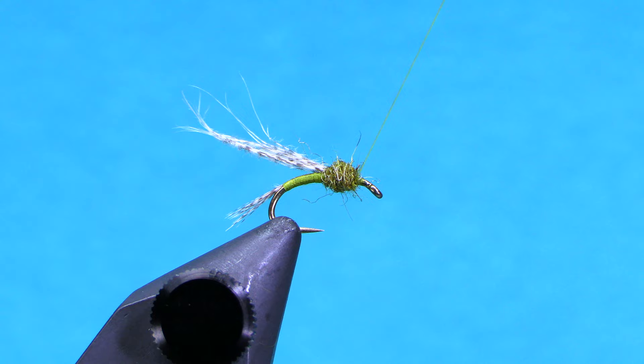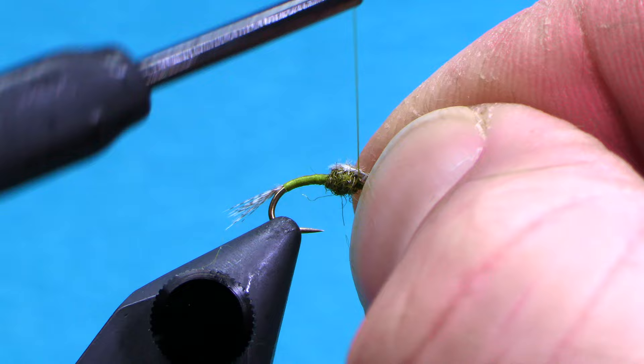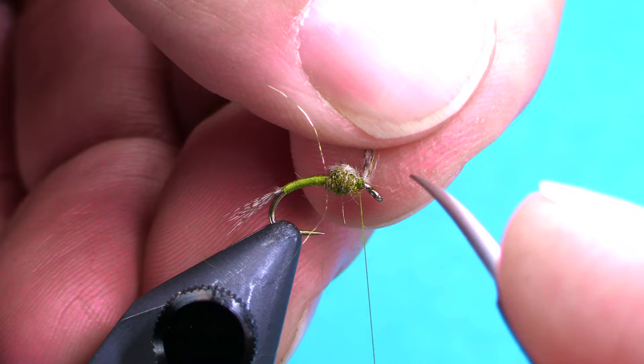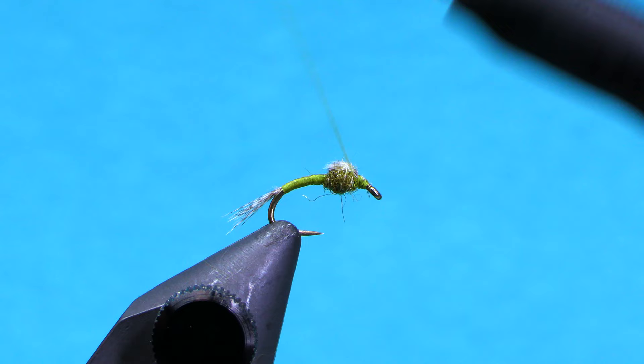Okay, now I got my thorax done. We can finish the fly by pulling our fibers over, put them straight over the top, tie them down. We'll take our scissors, get in there and take out the extra. And wrap that a few more wraps and then we'll finish with a whip finish.